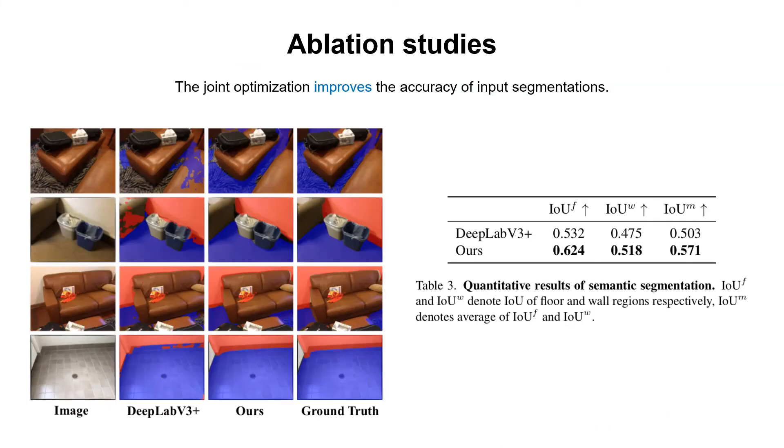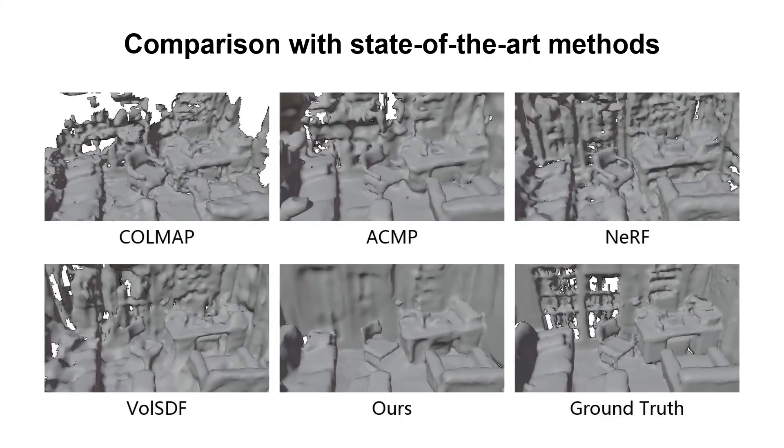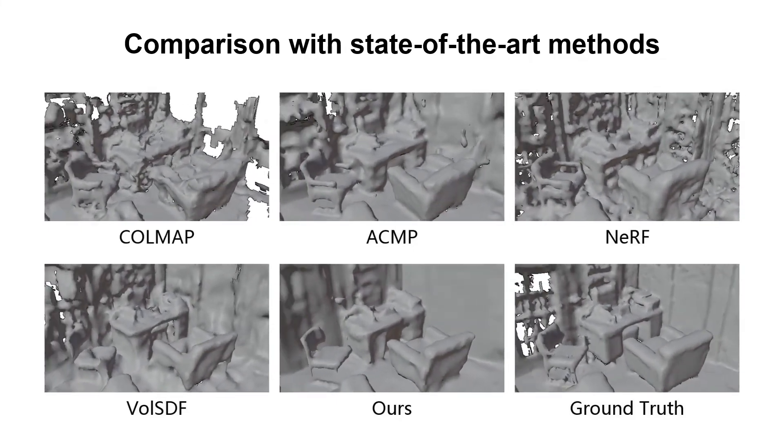The joint optimization also improves the accuracy of input segmentations. As shown in qualitative results, our method reconstructs geometry with better quality compared to state-of-the-art MVS and volume rendering-based methods.